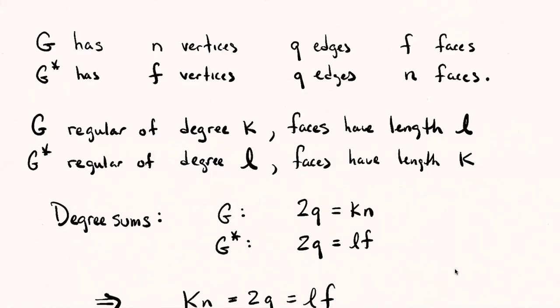Let's say that G is regular of degree K. That's how many edges are incident with each vertex in the graph G. And let's call its faces, let's say they have length L and they're all going to be the same length, the number of sides of the polygon. So then G* is going to be regular of degree L because the degree of a vertex in the dual is just the length of the face in the graph. And the faces are going to have length K for the same reason. G is regular of degree K, faces of length L. The dual is regular of degree L, faces have length K. Vertices and faces interchange in the dual.